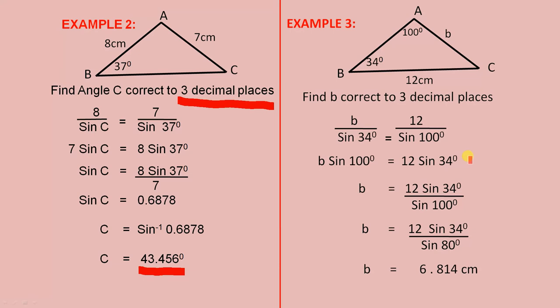Cross multiply to get that line. Divide both sides by sine 100 to get that line. We notice from previous videos that sine 100 is exactly the same as sine 80, because 100 is in the second quadrant and sine is positive in the second quadrant.